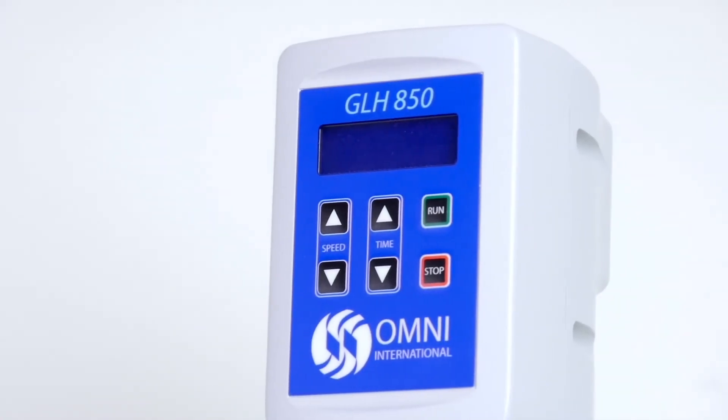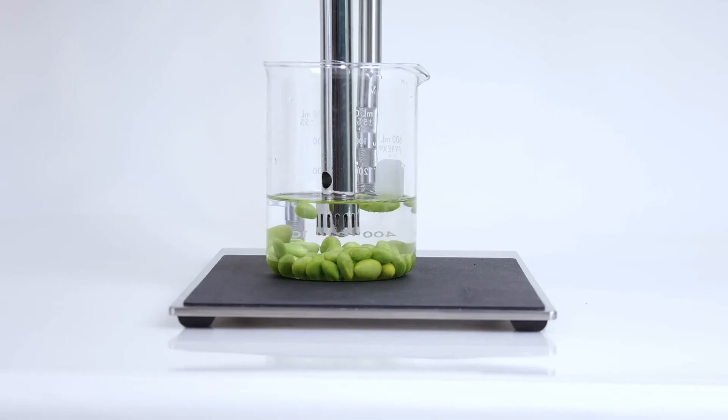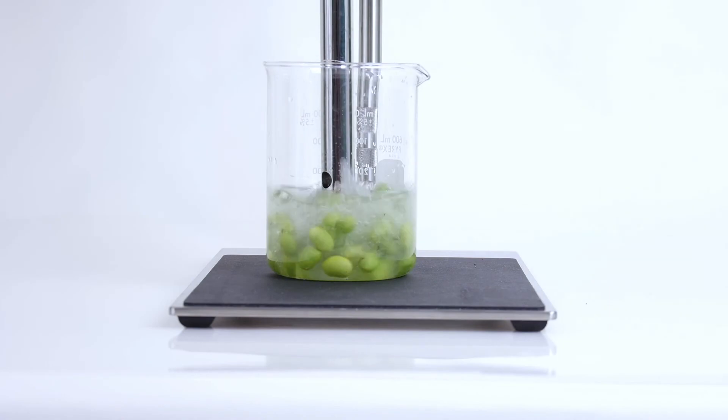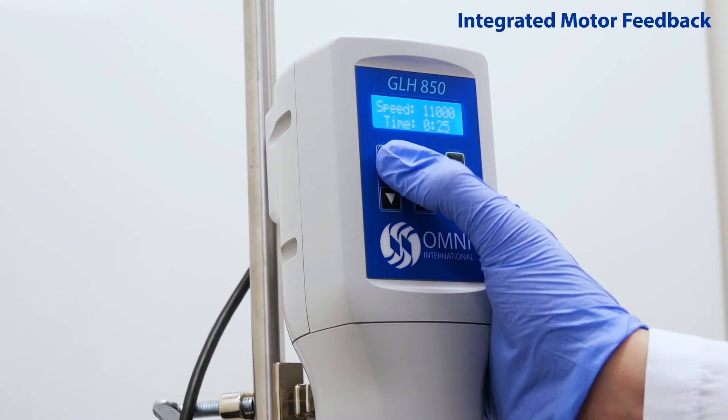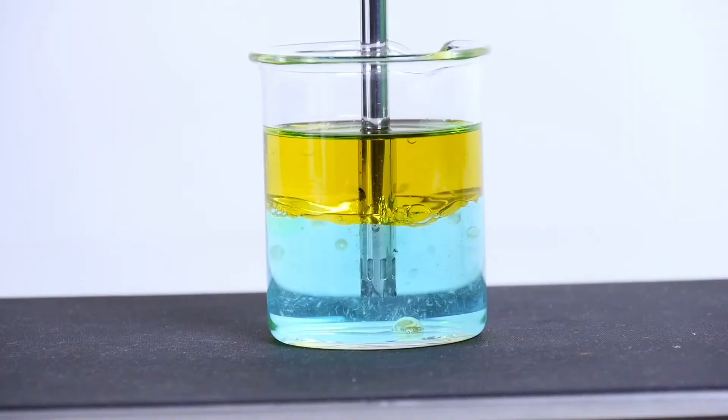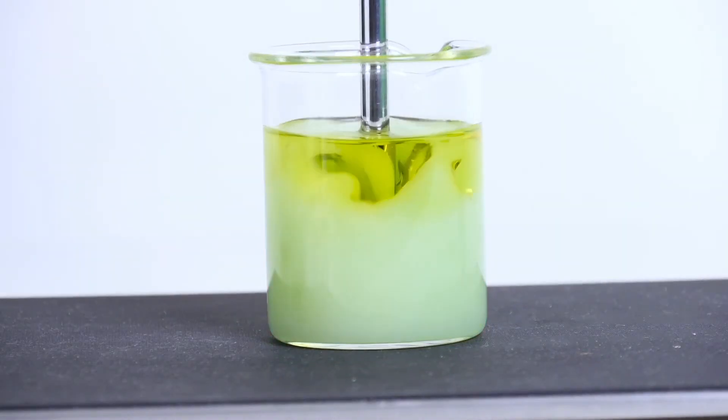The GLH 850's robust processing ensures complete homogenates and uniform particle size distributions. The integrated motor feedback holds set speeds during homogenization to ensure repeatable results regardless of any fluctuations in sample viscosity.